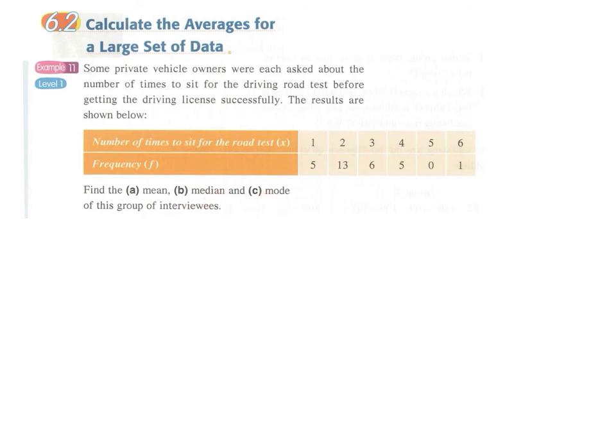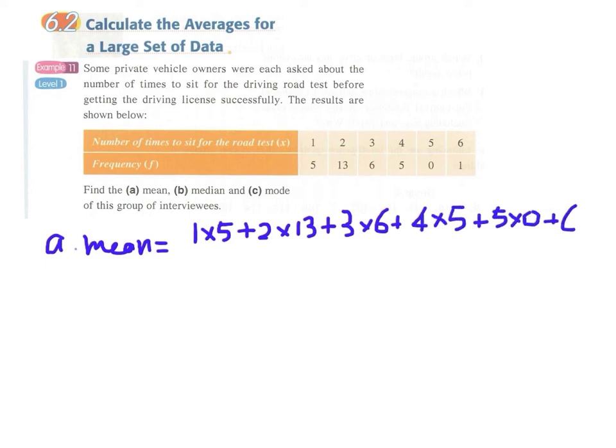For the mean, we multiply the number of times with the frequency and then add up all those numbers: 1×5 + 2×13 + 3×6 + 4×5 + 5×0 + 6×1. This will be the total number of trials.